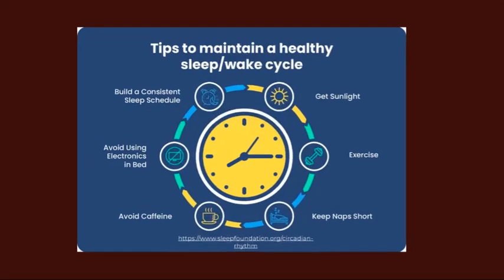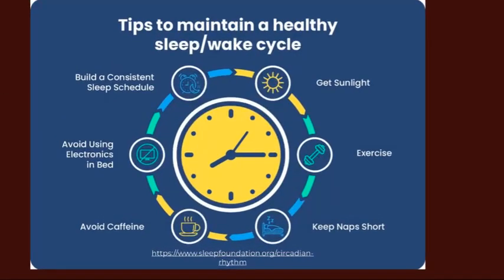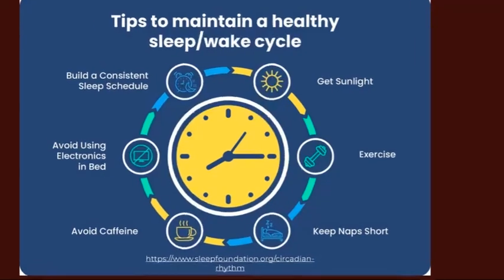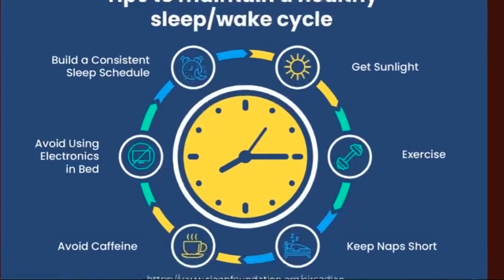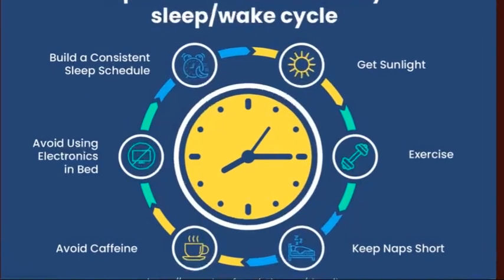Some tips to get your circadian rhythms in check: get sunlight early in the morning as soon as possible after waking up — getting daylight into your eyes will stop melatonin secretion and kick-start cortisol and your bodily systems. Exercise in the daytime, keep naps short, avoid caffeine, and avoid electronics at bedtime.